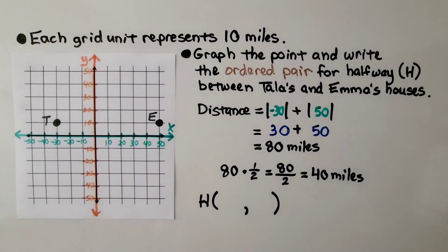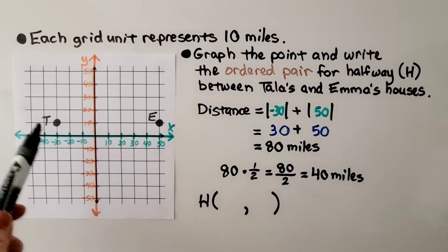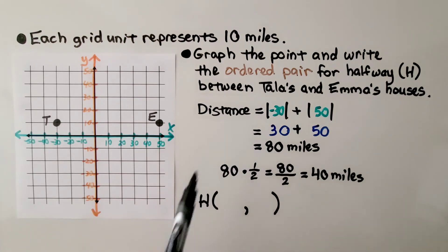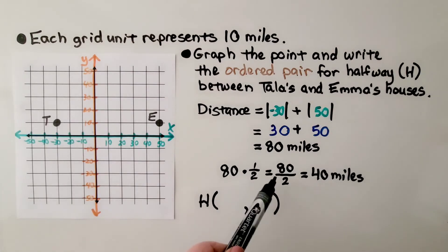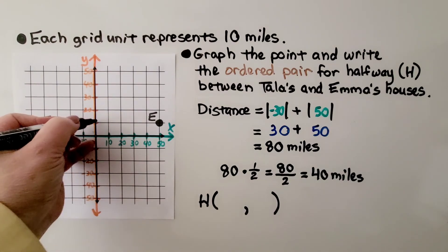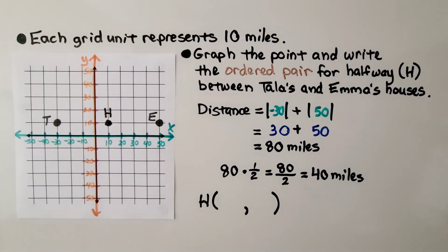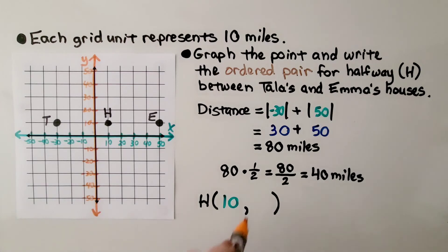Each grid unit represents 10 miles. We need to graph the point and write the ordered pair for halfway, H, between Tala's and Emma's house. The distance between their houses was 80 miles. To find the halfway mark, we do 80 divided by 2, which is 40 miles. Counting 40 miles on the grid — 10, 20, 30, 40 — that point is right here. The ordered pair for the halfway point H is x equals 10 and y equals 10.